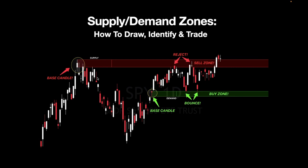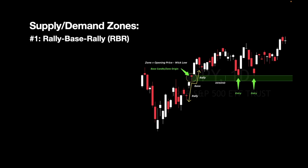You can see in this opening example that supply and demand zones are actually created from base candles. Your base candle is circled right here — this is the base candle for supply where the zone originated, and there's a base candle right here for demand where the zone originated as well. You can see price reacting very cleanly to them: a bounce and a bounce, a rejection and a rejection — so this is your buy zone and your sell zone. This is actually a real-time chart of SPY, maybe a day old.